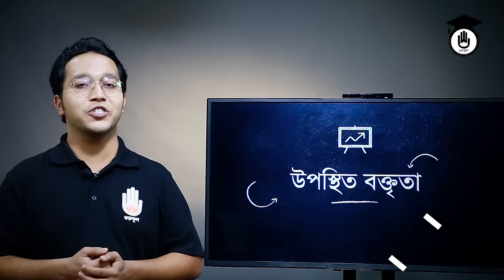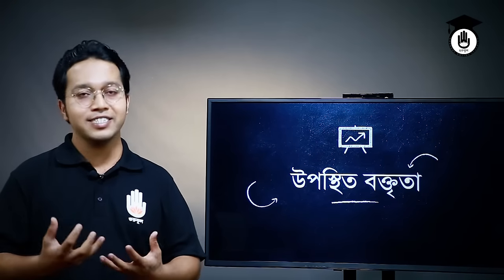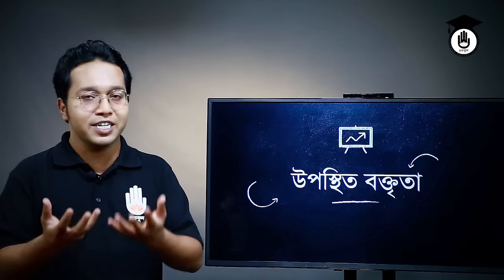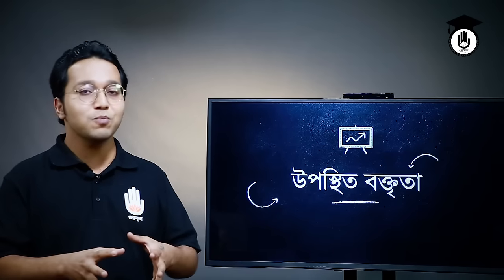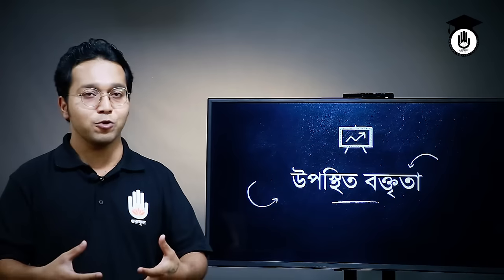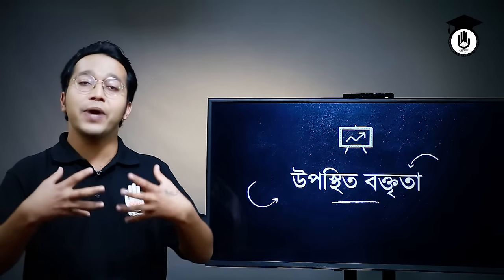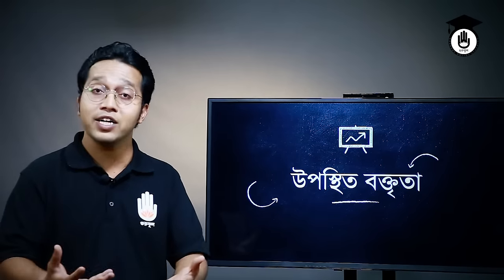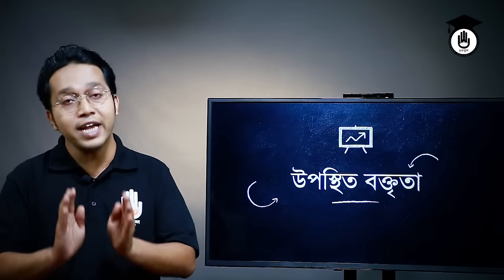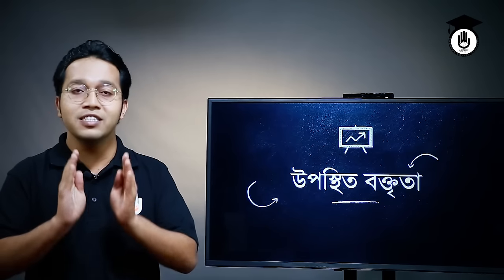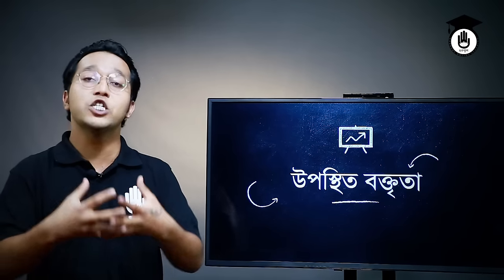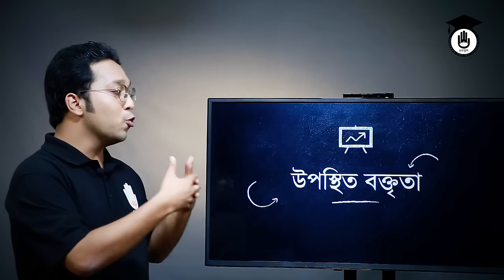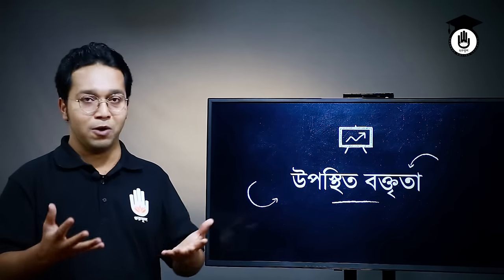બક્તૃત્તા (baktrita) કી? — તાર સેટા, બજારે, આગે, જે કોনો નির્ধારિત (niritarita) બક્તૃત્તા বলতে আমরা কী বুঝি? সেটা হলো — নির্ধারিত বিষয়ে বক্তৃতা। সেই নির্ধারিত বক্তৃতা, যেখানে হয়তো বেশ কিছু সময় আগে হতে পারে — এক সপ্তাহ হতে পারে, এক মাস — সহজ কথায়, বেশ আগে থেকেই তুমি জানো যে নির্দিষ্ট দিনে, নির্দিষ্ট বিষয়ে তুমি বক্তৃতা দিতে হবে।